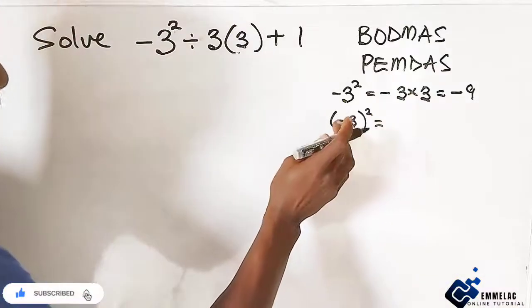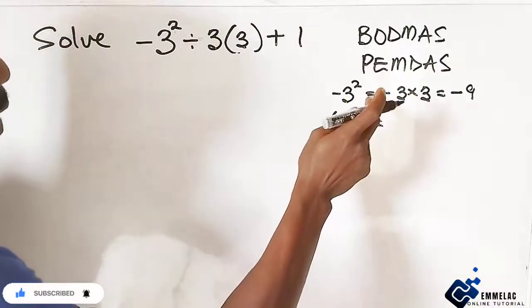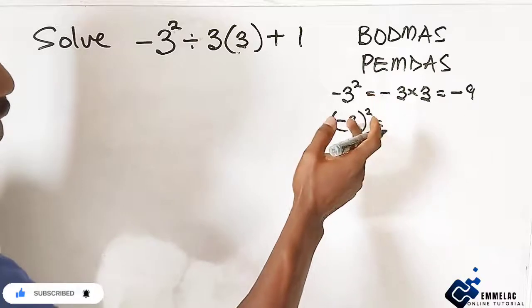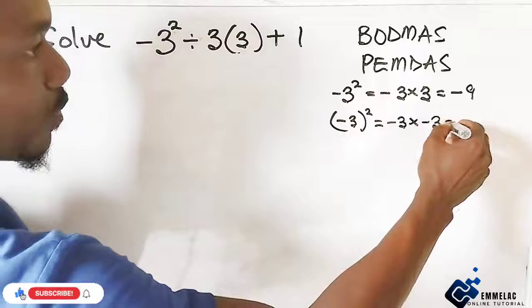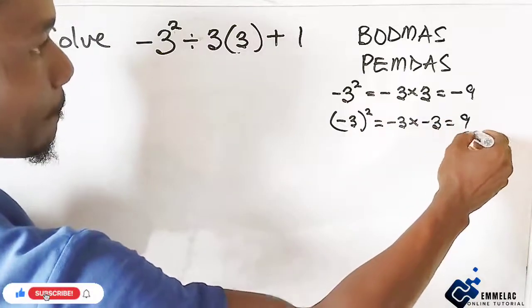And in this case here, -3 is raised to the power of 2, which means it is raised twice. That would be -3 times -3, which will give us what? 9.